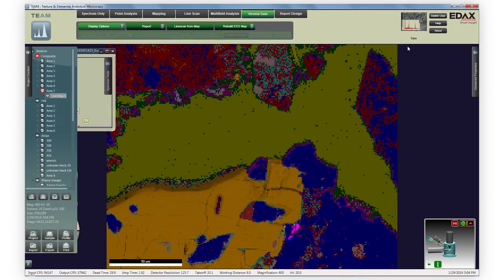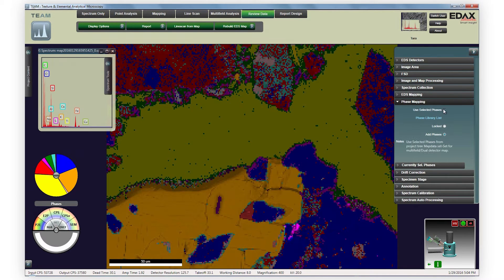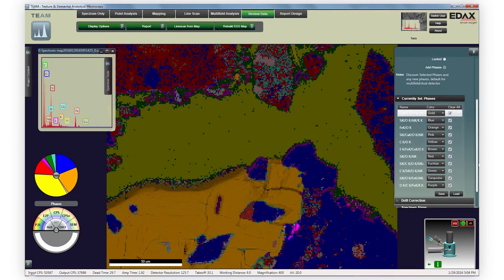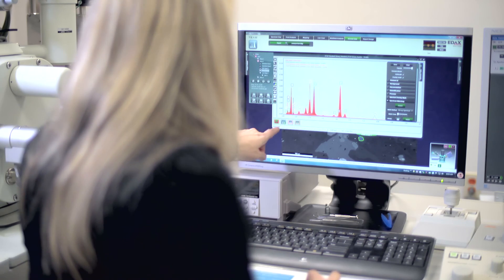Manual phase maps give the user full control to identify and set phases ahead of time. Phase libraries can be created, stored, and applied to any future collections, which standardizes phase maps across many samples and batches.